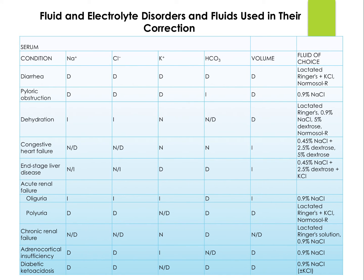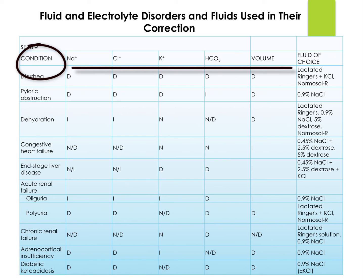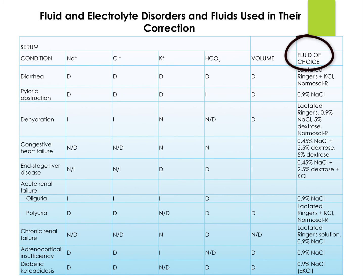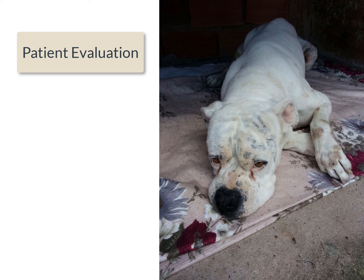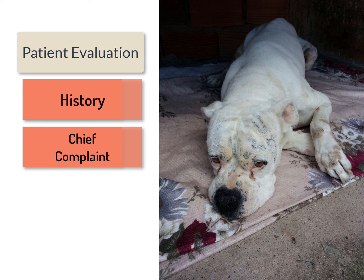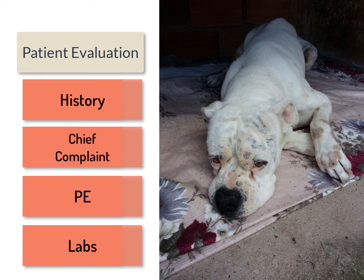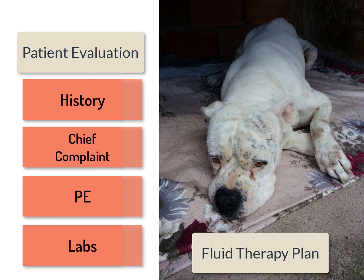We can use charts such as this example from the Wanamaker and Massey pharmacology textbook, which gives examples of different medical conditions in animals and the expected changes in electrolytes, bicarb, and total fluid volumes. The last column contains suggested replacement fluids that we may use in these patients. In evaluating a patient for fluid therapy requirements, we take into consideration the patient's history, which may give an indication of the type of fluid losses and their duration, the chief complaint by the owner, and the results of our physical exam. This helps determine the need for additional testing such as lab work and guides us in determining a fluid therapy plan.